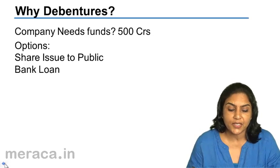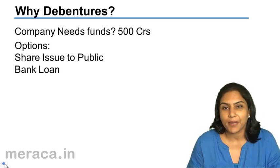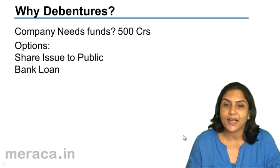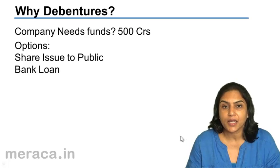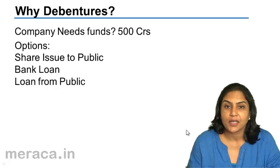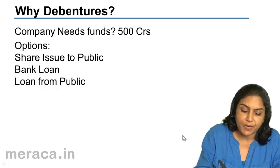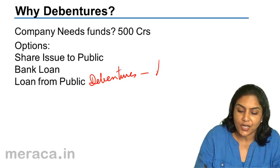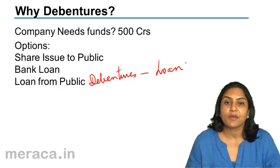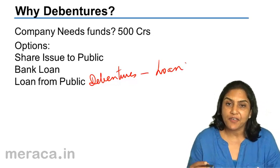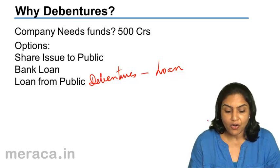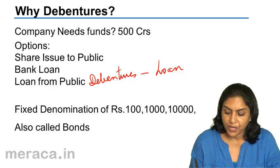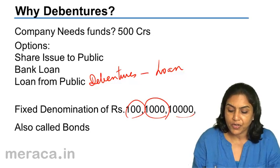Another option is to raise loans from the public. Debentures are nothing but a loan from the public. Just like a company can raise money by the issue of equity shares, a company can also raise money from the issue of debentures, which are actually nothing but a loan given by the public. The advantage is that debentures may be of different denominations — 100, 1,000, or 10,000.